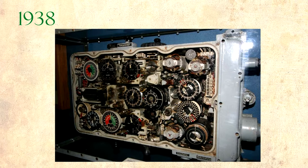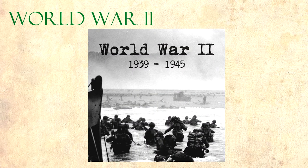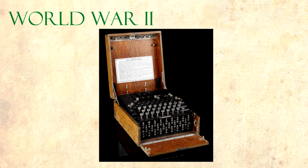By 1938, the United States had developed a computer small enough to fit into a submarine. The torpedo data computer could solve the problem of firing a torpedo at a moving target. During World War II, the British Army, located at Bletchley Park, achieved a number of successes by breaking encrypted German military communications. There were two devices built to break these codes: Bombe and Colossus.